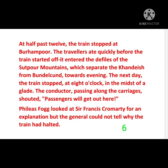At half past twelve, the train stopped at Burhanpur. The travelers ate quickly before the train got started again, and then entered the steep-sided defiles of the Satpura Mountains. Defiles mean steep-sided passages which separate the Ganges mountains from Bundelkhand. Towards evening the next day, the train stopped at eight o'clock in the middle of a glade — a glade being a small area of grass without trees in a forest.